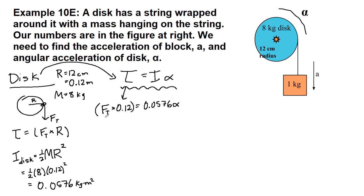Just to clean this up a bit, I'm going to divide both sides by 0.12, and we get that the tension on the left is equal to 0.48 on the right times the angular acceleration on the right. All right, so right now we have an equation with two unknowns, so we'll set it off to the side.